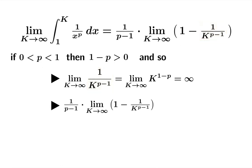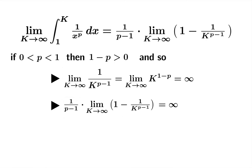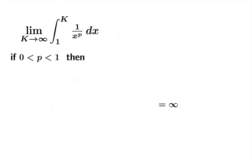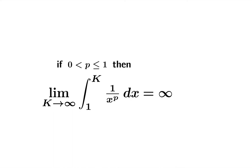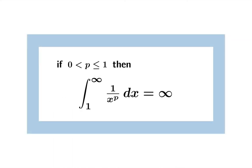In our expression for the definite integral from 1 to k, the prefactor is negative because p is between 0 and 1, and the term 1 over k to the p minus 1 diverges to negative infinity. But the signs cancel and the overall limit actually diverges to infinity. So the improper integral from 1 to infinity of 1 over x to the p diverges to infinity for p between 0 and 1, and we've already included the case p equals 1.